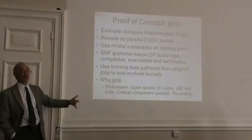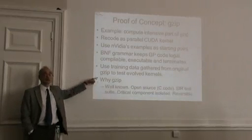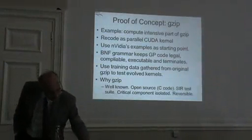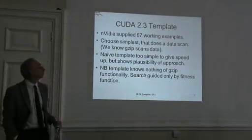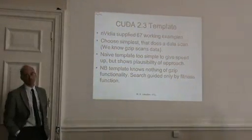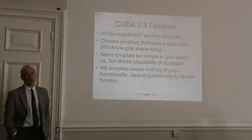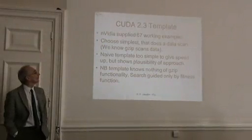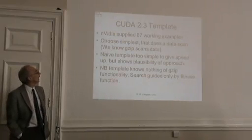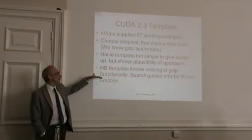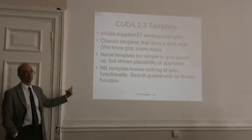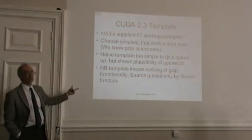When we come to the fitness testing, we test the new GP-generated code with the data we gathered on the original version of gzip. NVIDIA has supplied a large number of working examples generated by experts in CUDA. I've taken one of those that seemed the closest match to what we wanted gzip to do. But the template we supply to GP knows nothing about gzip itself — it just constrains GP to generate things which will be CUDA kernels, and the search is guided by the fitness function.